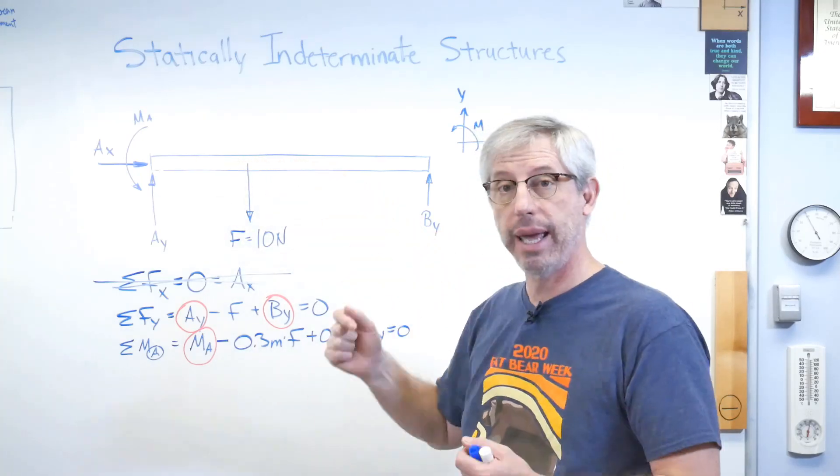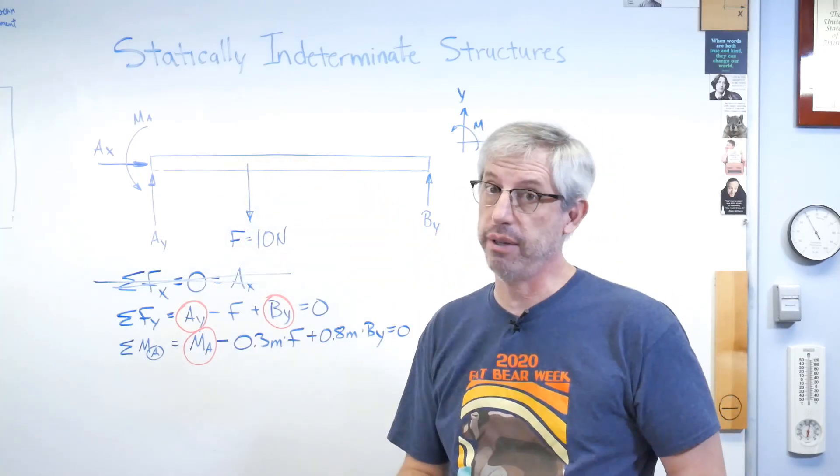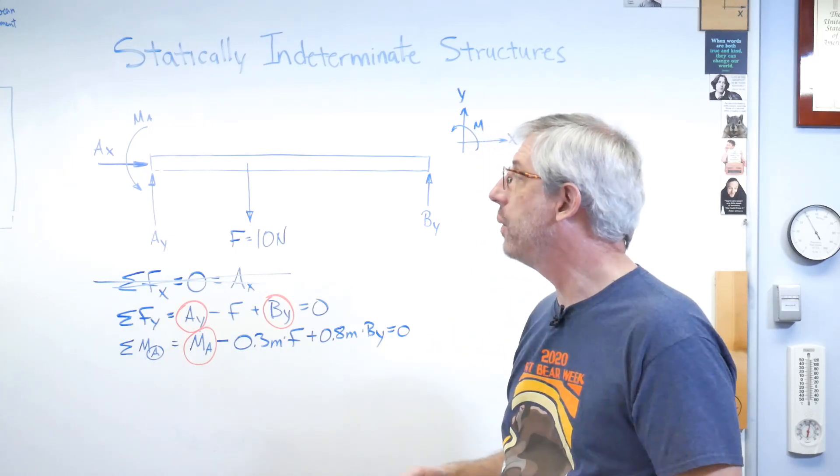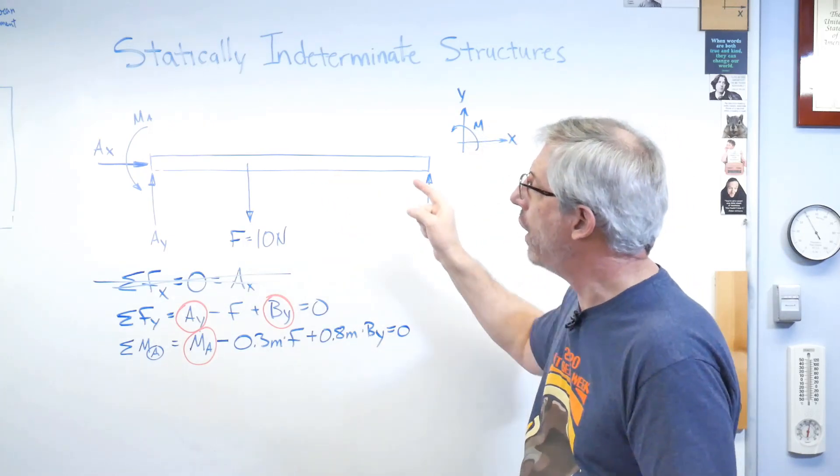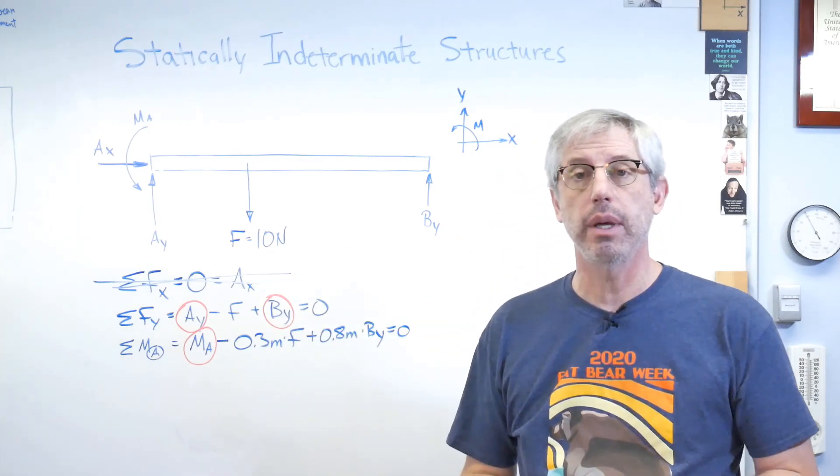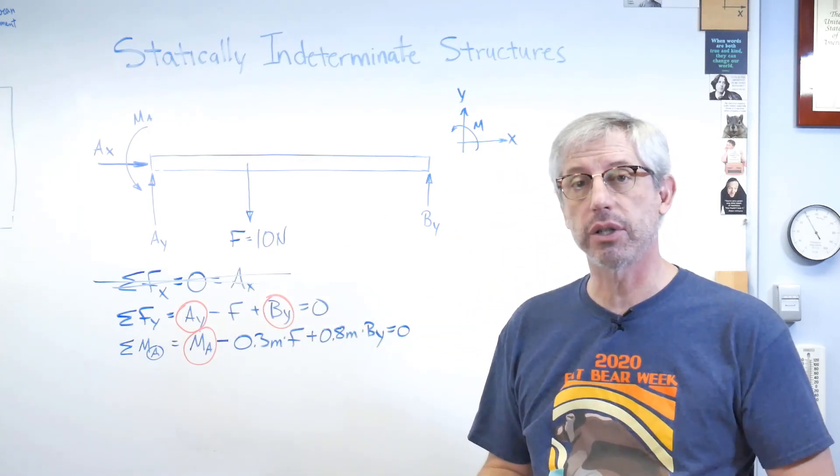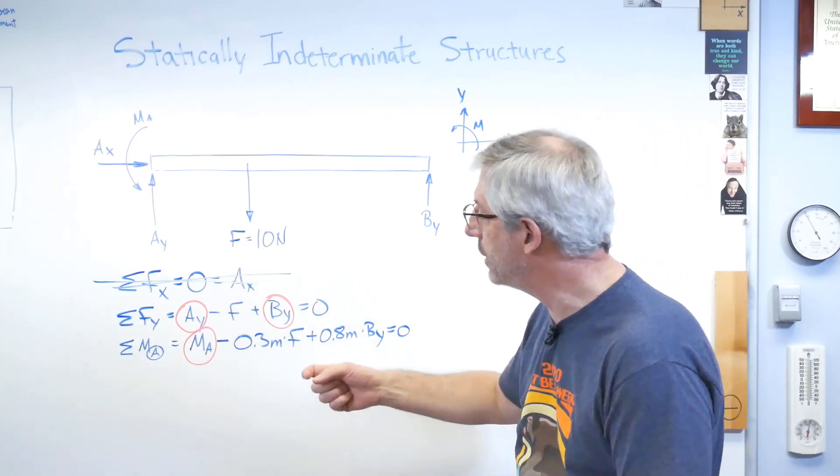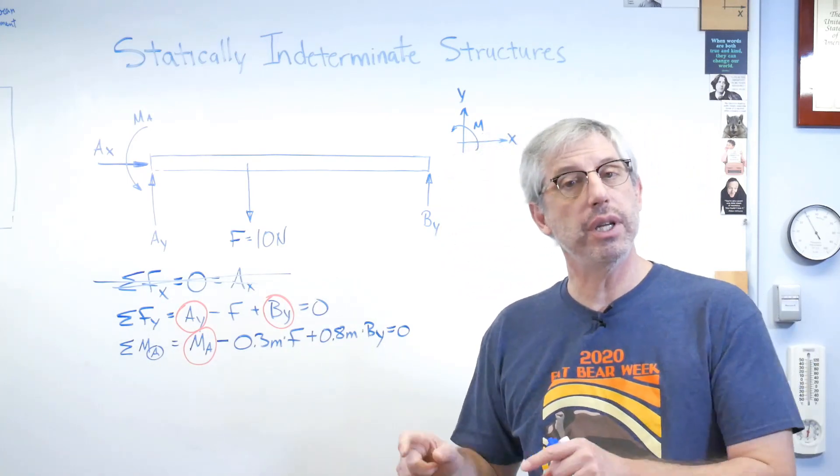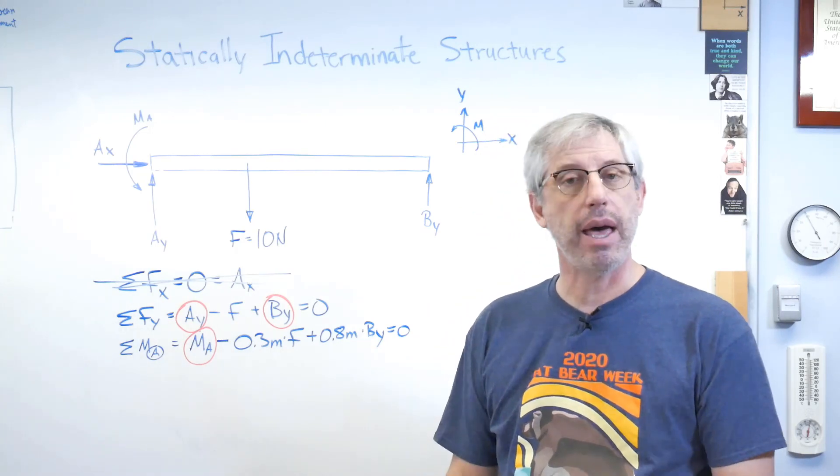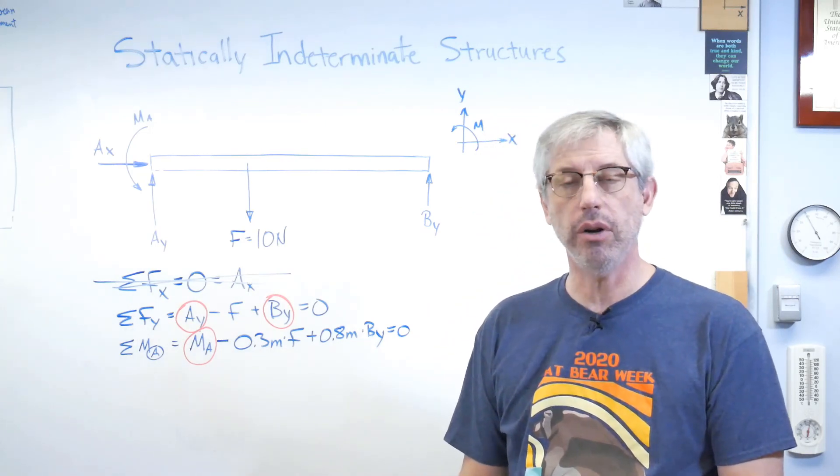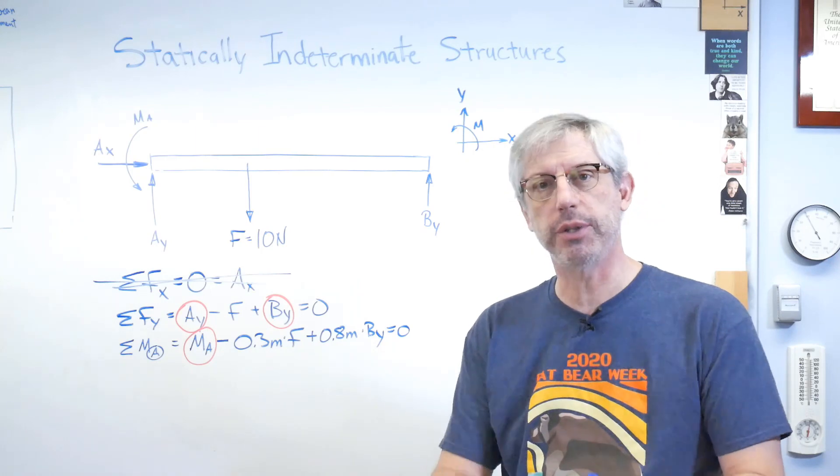But that's the next class, and in that class you start assuming the structure can bend. Well, clearly that structure down there was bending a lot, so assuming that it's rigid wasn't a great assumption. So when you add in the mathematics that describe the deformations of the structure, that gives you enough extra equations. Now you can solve this. So you can solve this problem, you just can't do it using statics. And that makes it statically indeterminate. So I hope this helps, and we'll talk to you next time.